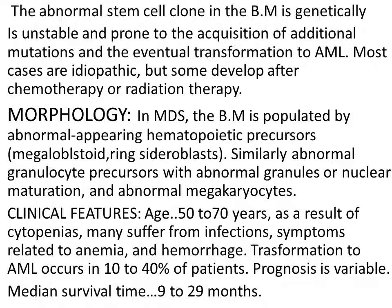In megaloblastic anemia, we have erythroid precursors which are larger in size than their normal counterparts, and there is some dissociation — there is defective DNA synthesis due to folate or B12 deficiency. There is dissociation between the maturation of the nucleus and the cytoplasm, resulting in the production of some larger cells called megaloblasts — erythroid precursors which are bigger than their normal counterparts. Similarly, we can see megaloblastoid changes — megaloblastic anemia-like changes — in the bone marrow in these MDS patients.